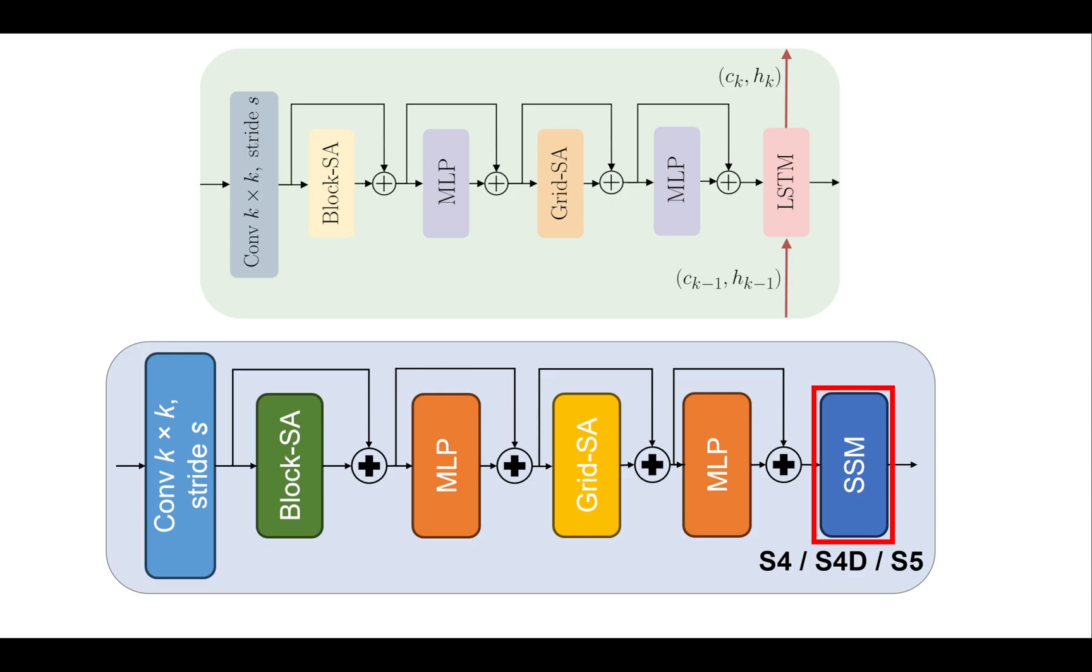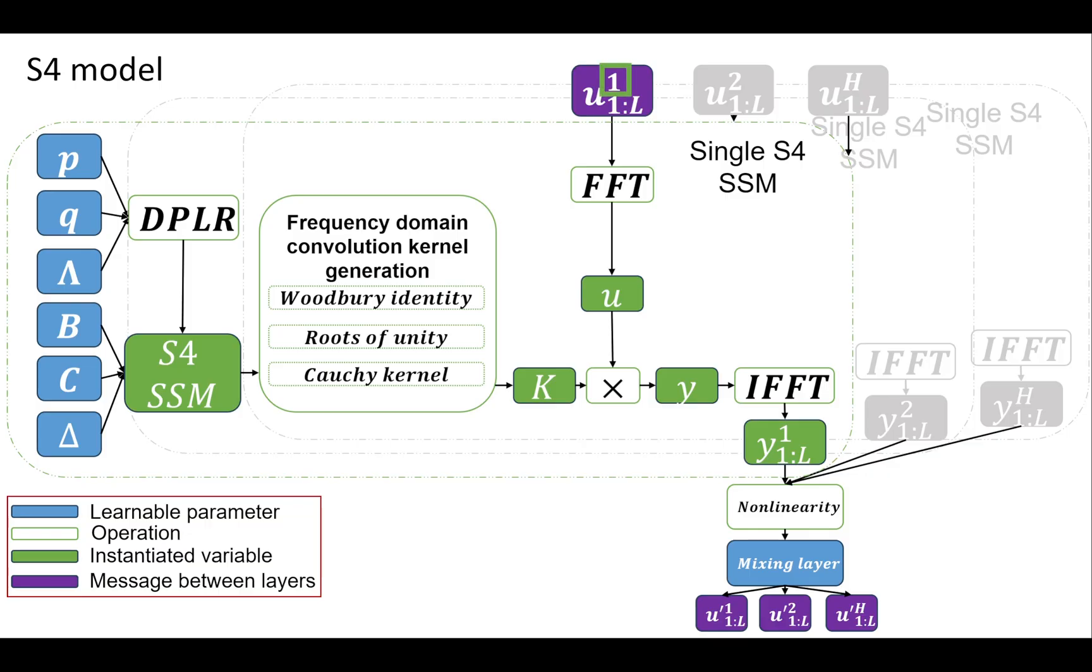In the S4 layer, each dimension H of the input sequence U, where L denotes the sequence length, is processed by an individual SSM. This involves using a Cauchy kernel to determine coefficients for frequency domain convolutions. Fast Fourier transforms perform the convolutions, generating the output Y for each SSM. These outputs then pass through a nonlinear activation function and a mixing layer to produce the final output of the layer.